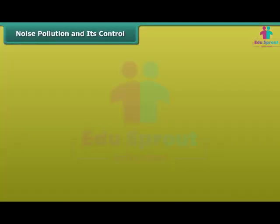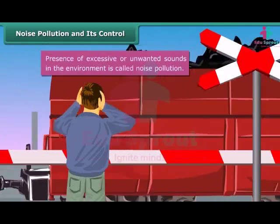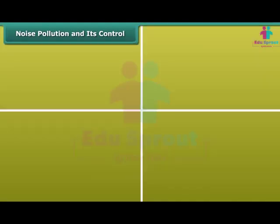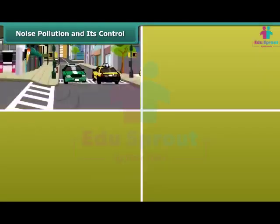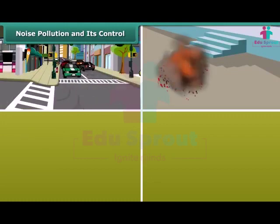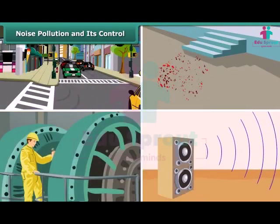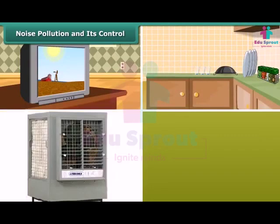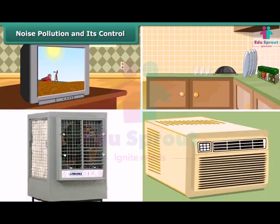Noise pollution and its control: The presence of excessive or unwanted sounds in the environment is called noise pollution. The major causes of noise pollution are sounds of vehicles, explosions including bursting of crackers, machines, loudspeakers, television and transistor radio at high volumes, some kitchen appliances, desert coolers, and air conditioners.